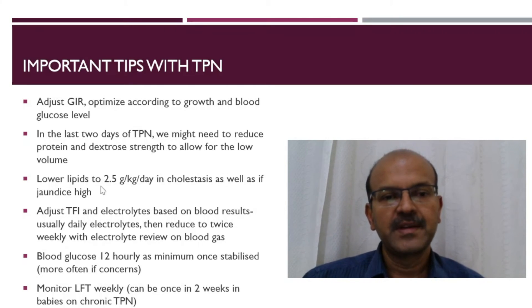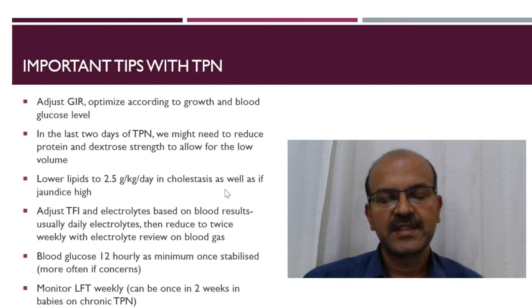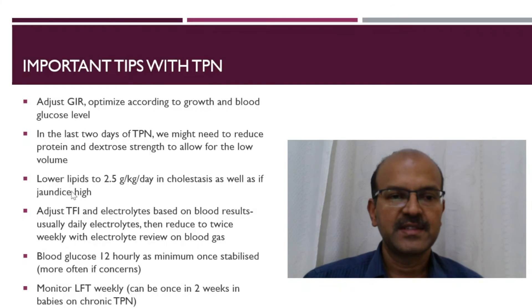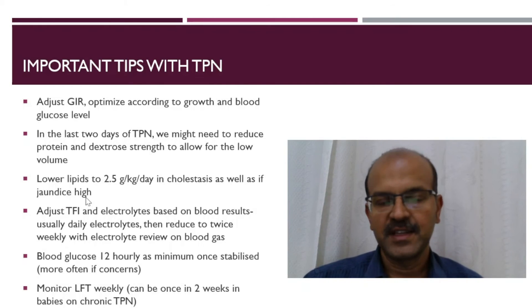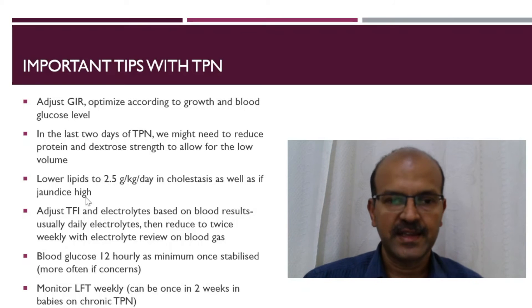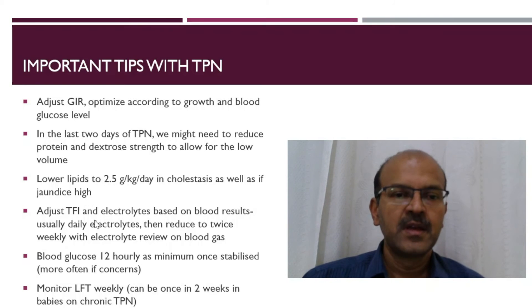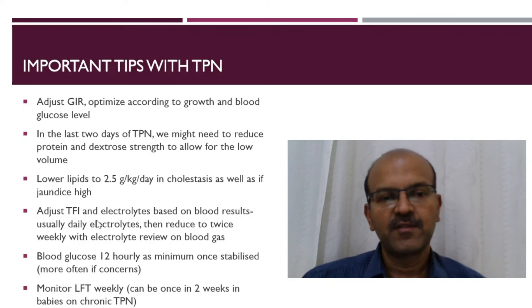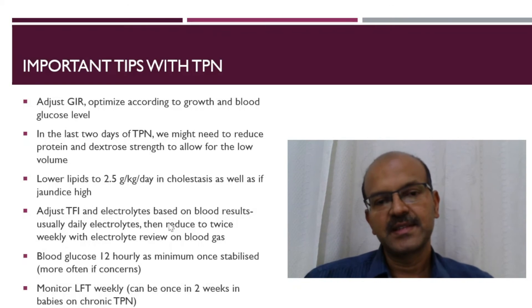Lower the lipid to 2.5 grams per kilo per day in cholestasis, as well as if the jaundice level in the acute phase is high. Adjust the total fluid and electrolytes based on the blood results.